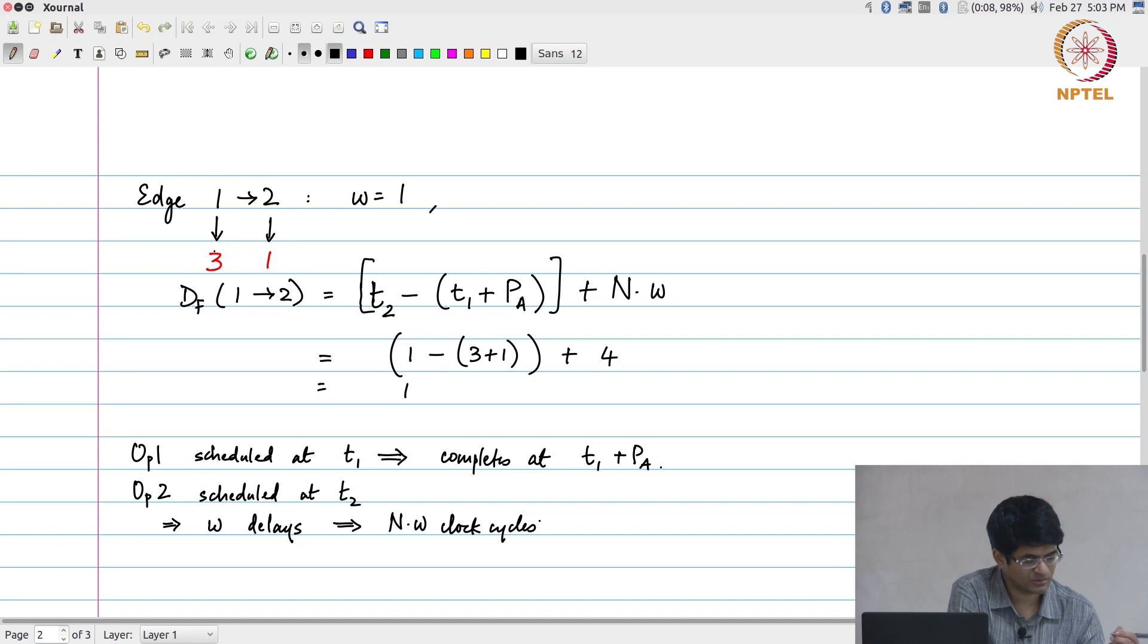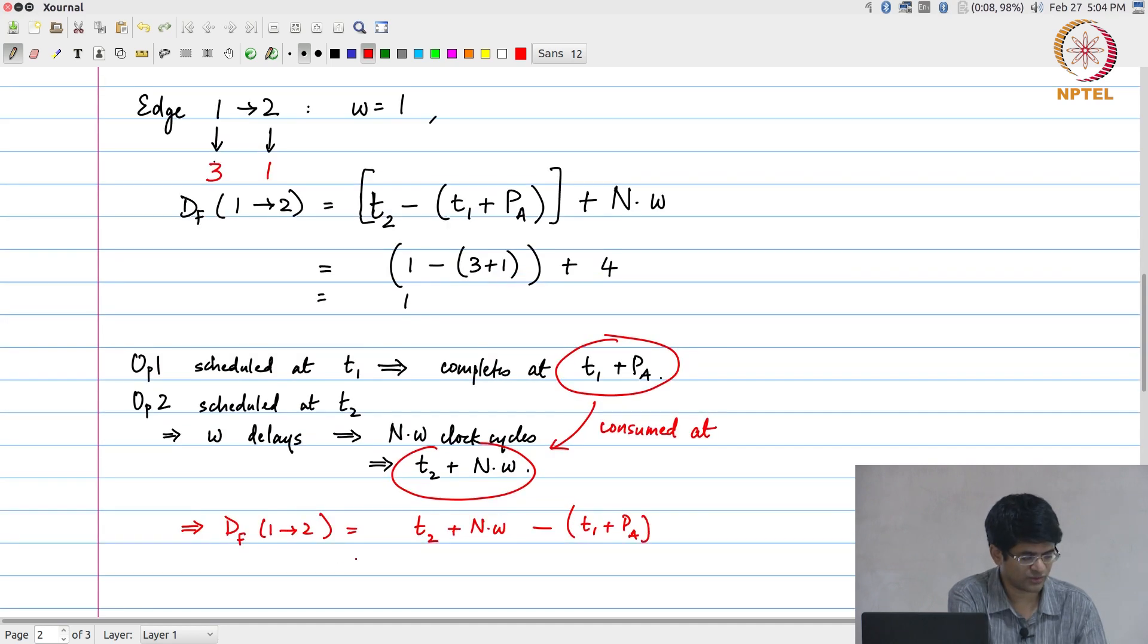The data that was produced at time t1 plus pa is going to be consumed at time t2 plus n into w. For that much intermediate time I need to store that value. That is the number of extra physical registers that I will need to allocate somewhere to save the data until it is ready to be consumed which is what we have over here.